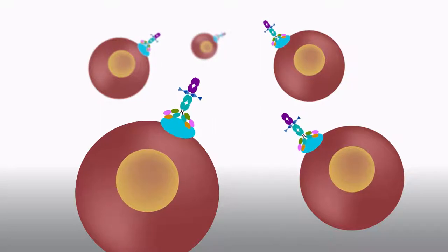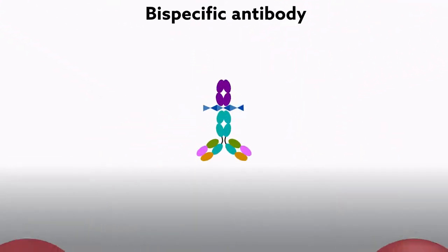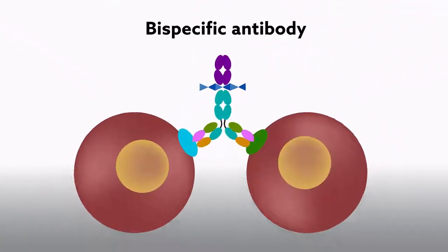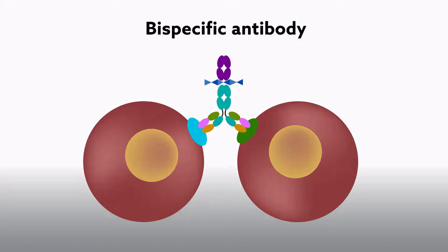And not just one type at a time. So-called bispecific antibodies seek out two targets at once and have proven therapeutically more effective than their single-target counterparts.